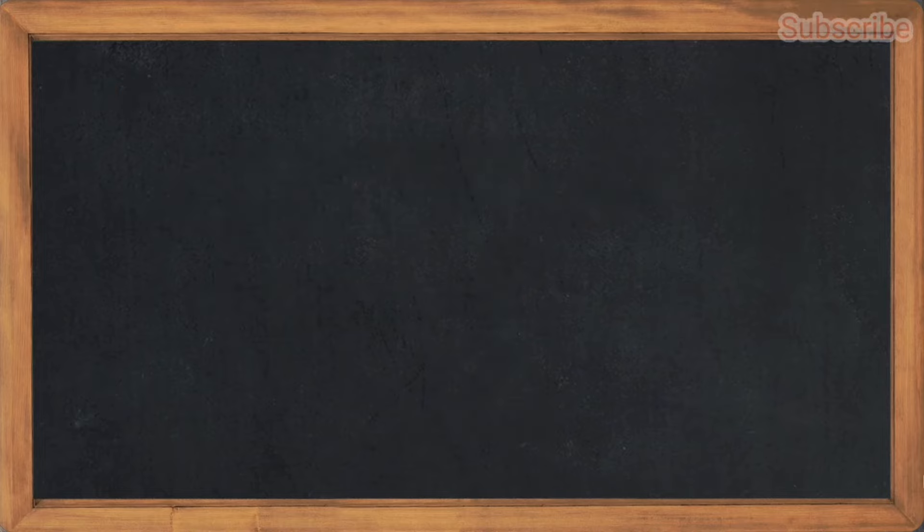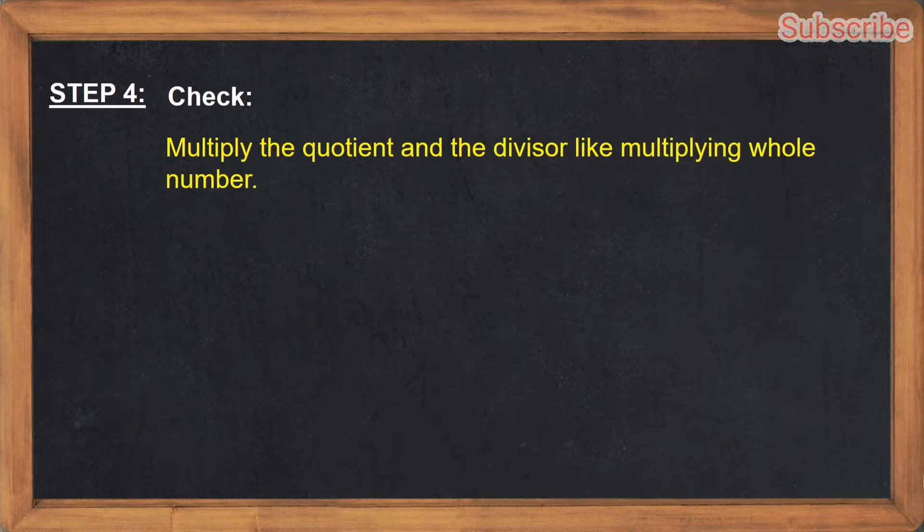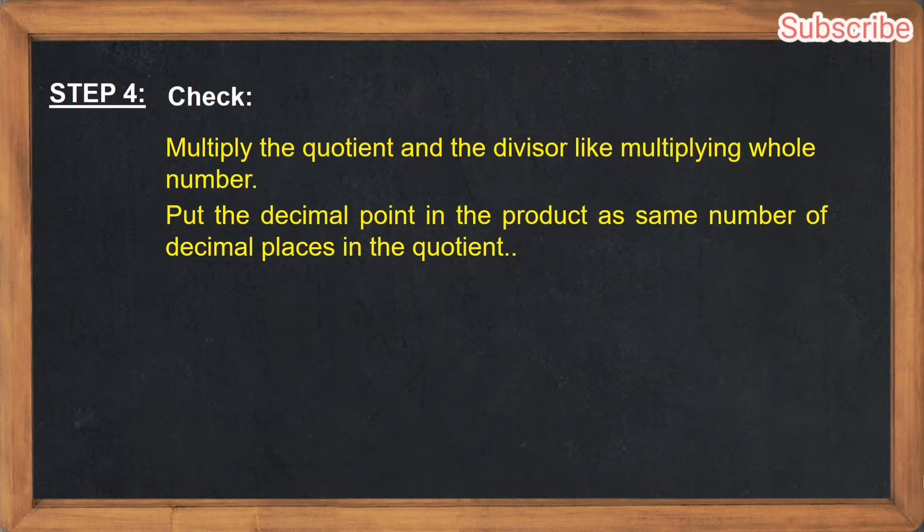And for the last step, we have step number four: Check. How do we check? Multiply the quotient and the divisor like multiplying whole numbers. Put the decimal point in the product as same number of decimal places in the quotient. 0.5 times 5, that is 2.5.